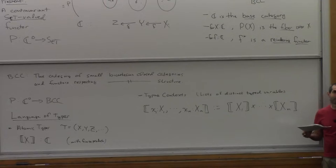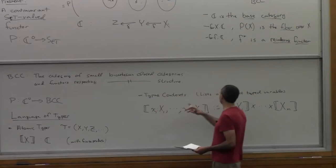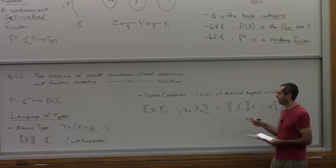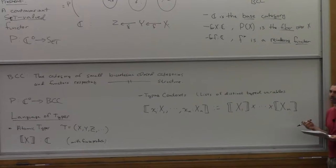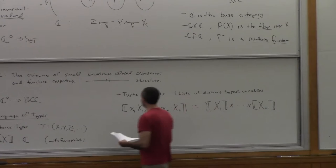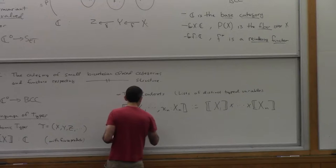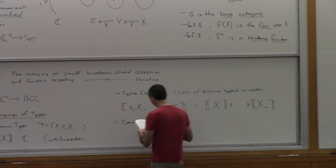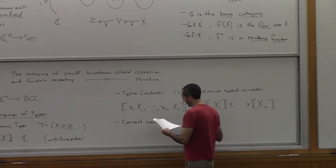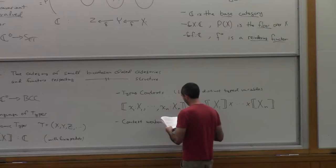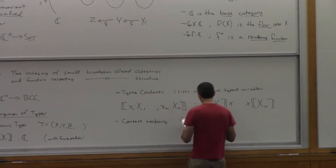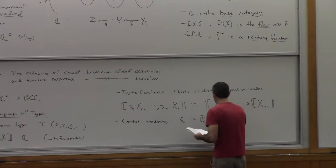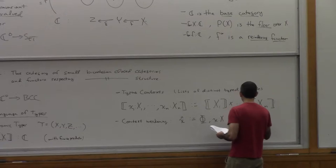To interpret an atomic type, we have to pick out an object in some category. The types are going to be objects, and we want this category to have finite products. So an interpretation of an atomic type is any object in the category we're choosing to do our interpretation in. Someone asks you what is the type nat, and you say it's this object.